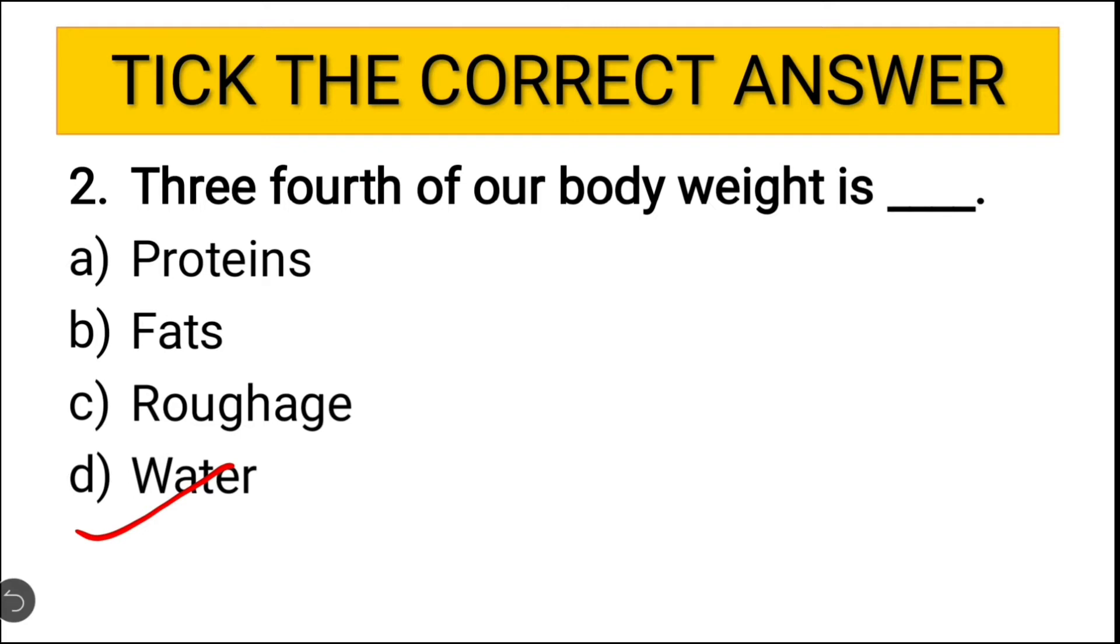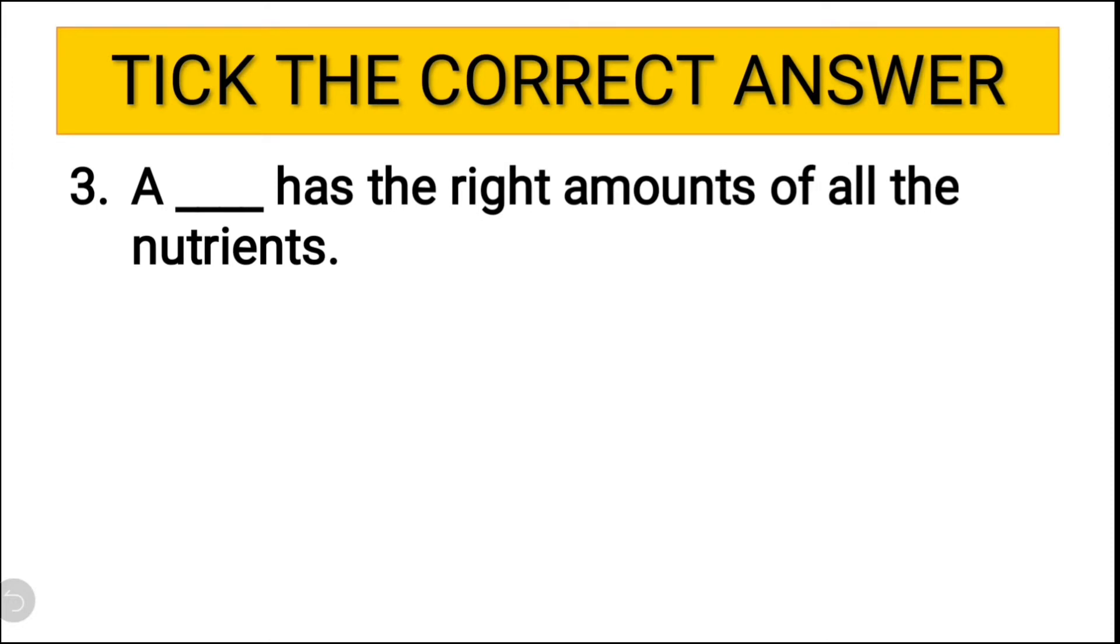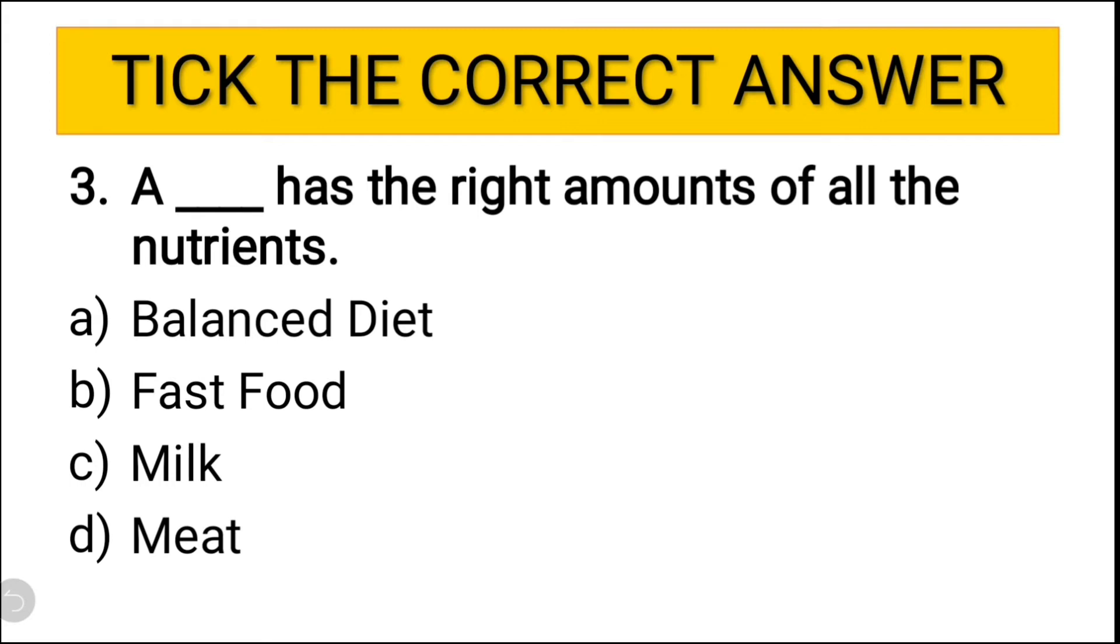Let us see next point. A dash has the right amount of all the nutrients. The options are balanced diet, fast food, milk, meat. So which type of food has the right amount of nutrients present? The answer is balanced diet.